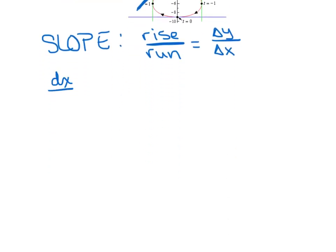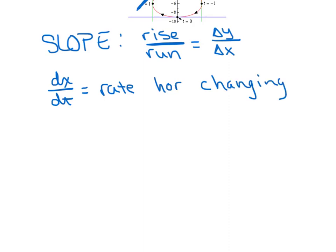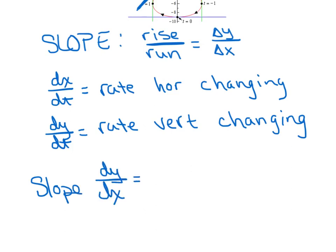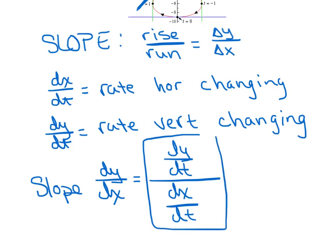So, dx/dt is the rate at which the horizontal position is changing. Similarly, dy/dt is all that measures — the rate at which the curve's vertical position is changing. Neither one of them, by themselves, measures slope. The only way to measure slope is to calculate dy with respect to x. We're going to say the derivative of y with respect to t divided by dx/dt.